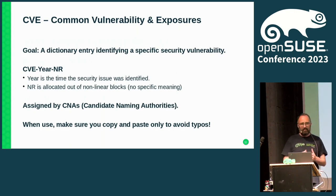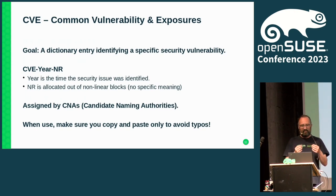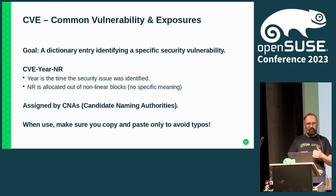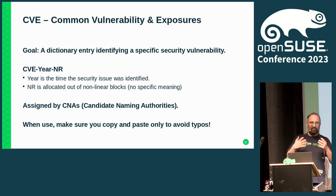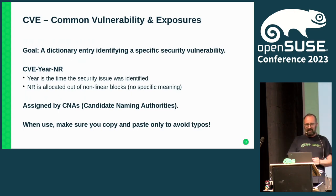Starting with one of the basic building blocks: the Common Vulnerabilities and Exposures identifier. Every security vulnerability has an identifier — a so-called CVE. It doesn't say anything about how severe it is; it's just a dictionary entry used as a key. It's handed out by so-called candidate naming authorities. The ID looks like CVE, a year, and a running number. Running numbers go up to 20,000–30,000 in recent years, giving an impression of how many vulnerabilities get identifiers assigned. If you're a packager, make sure you copy-paste these rather than type them manually, because flipping numbers can happen easily.